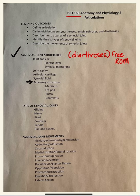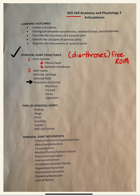There are several structures we need to understand. The first is the joint capsule, which has two parts: a fibrous layer and a synovial membrane. The next structure is the cavity itself, which is the space between the two articulating bones.